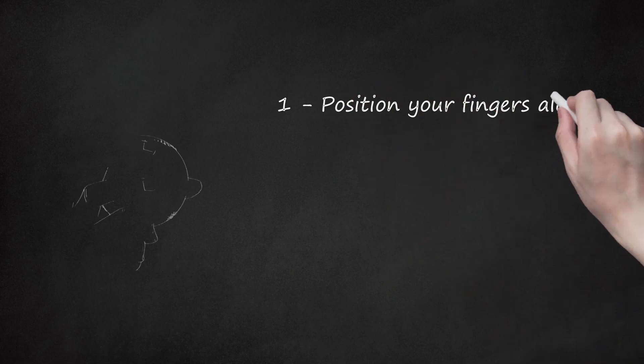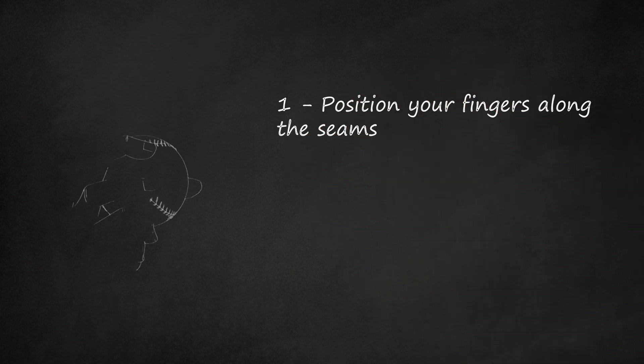Step 1: Position Your Fingers Along the Seams. Turn the ball so that your forefinger and middle finger are positioned along the seams where they're closest together. Your fingers should lay directly on top of the seams, parallel to each other. Tuck your ring finger and pinky finger back.